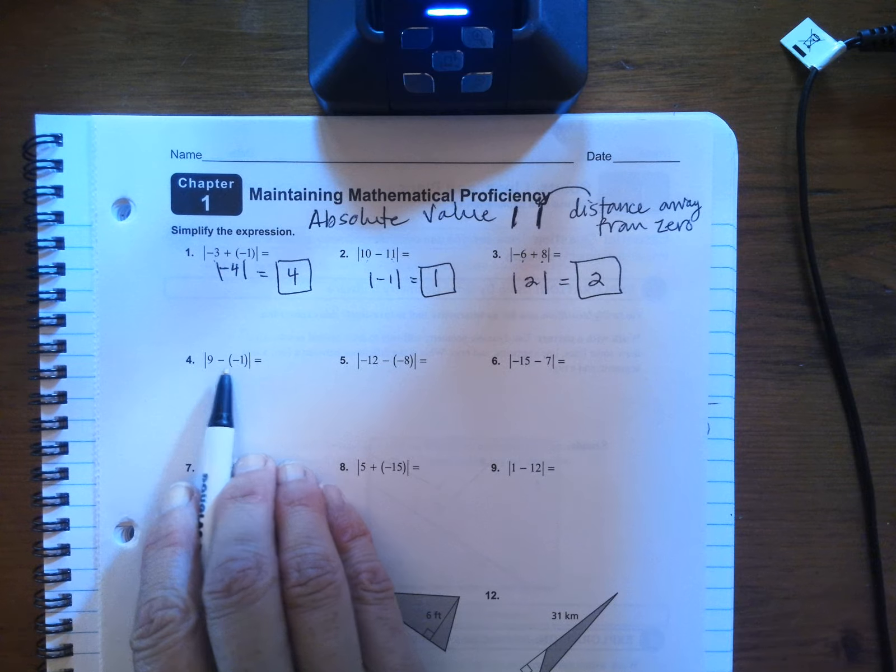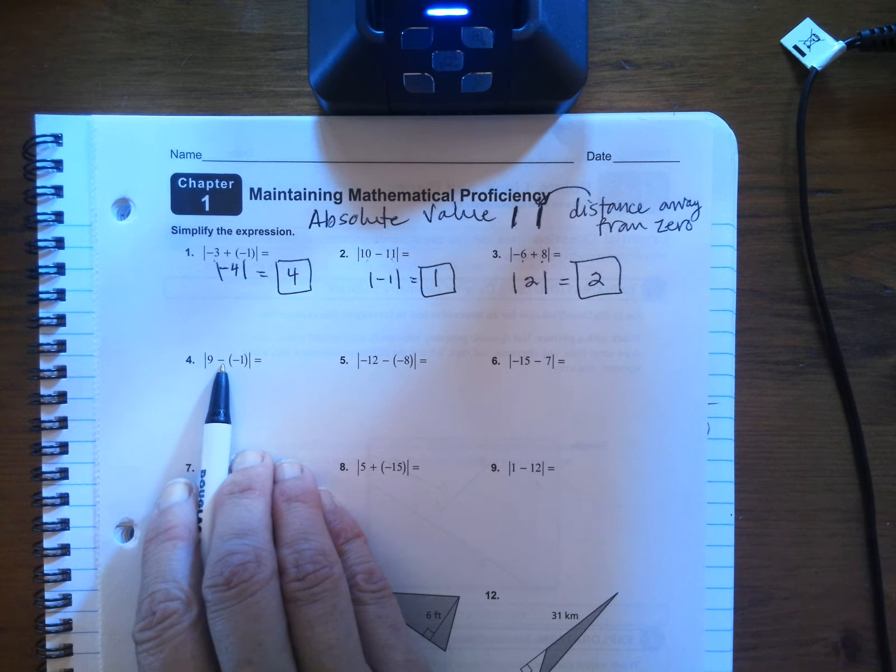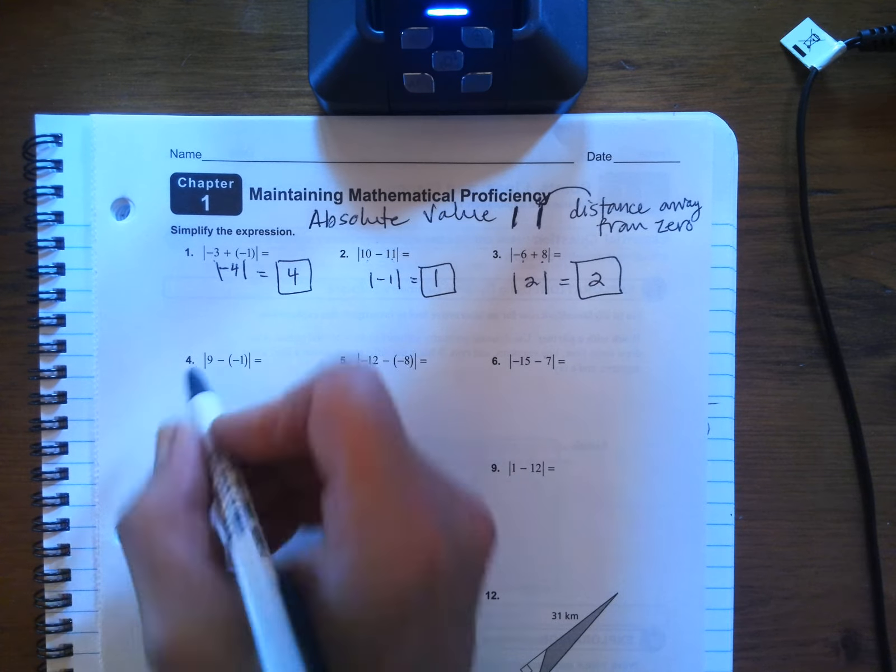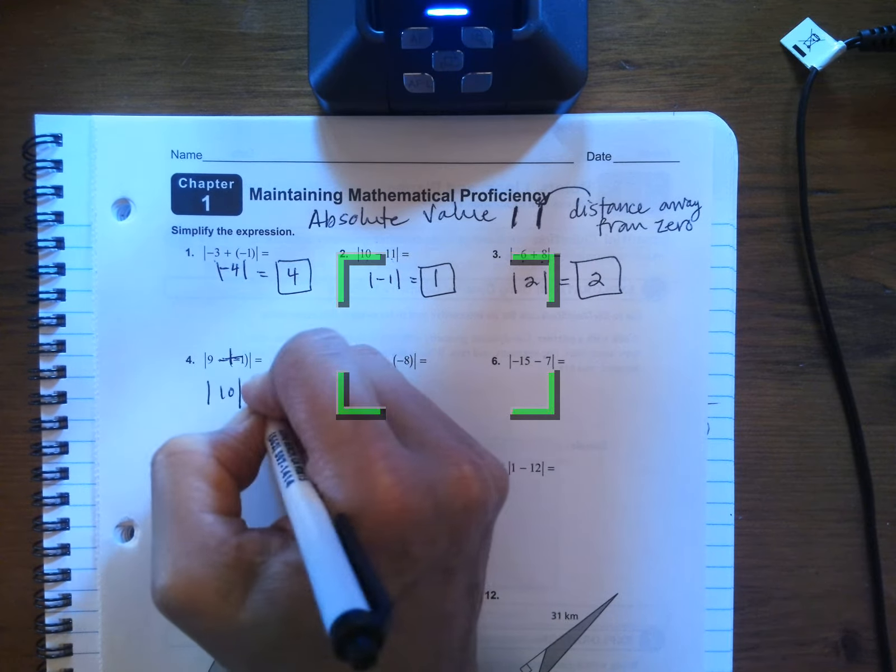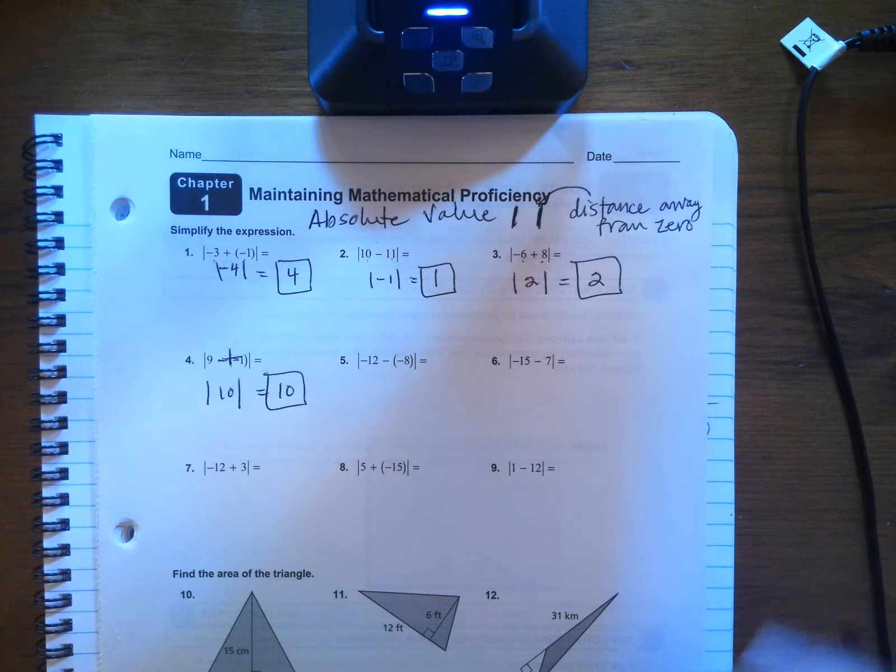Number four, nine minus negative one is the same thing as nine plus one, because when you have negative negative, you can add that into one big plus. So it's the absolute value of 10, which is 10. That's your final answer.